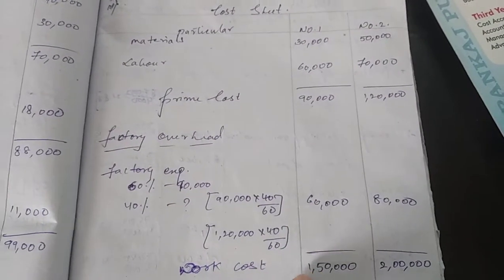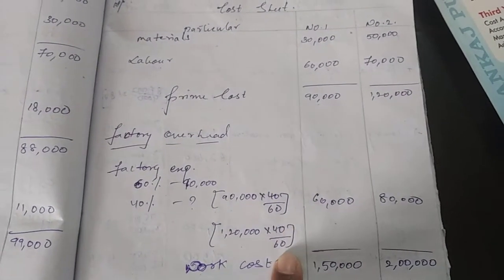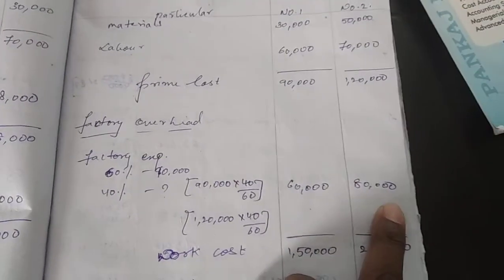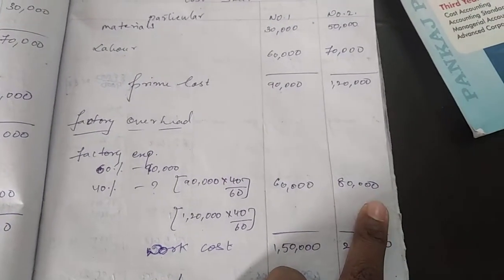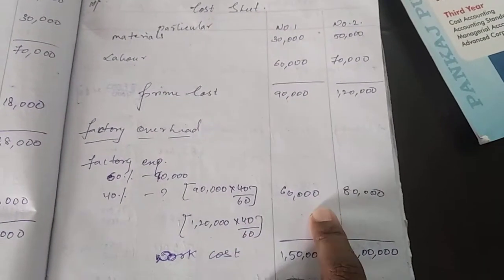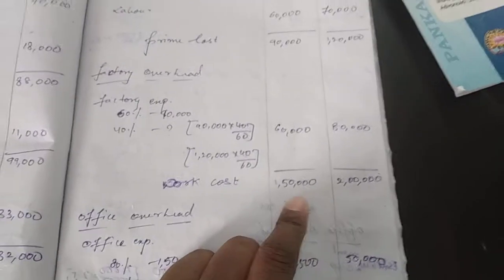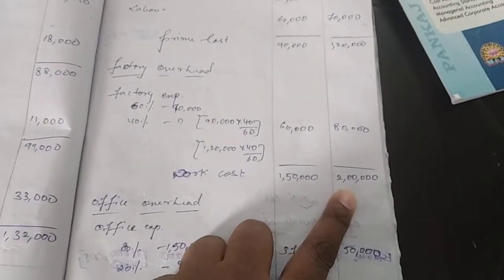For Article 2, prime cost is 1,20,000 at 60%, so for 40% by cross multiplication, factory overhead is 80,000. Adding prime cost and factory overhead gives work cost: 1,50,000 for Article 1 and 2,00,000 for Article 2.